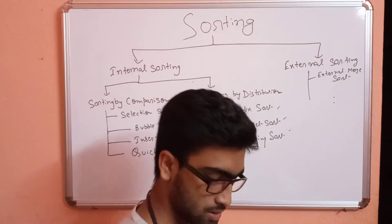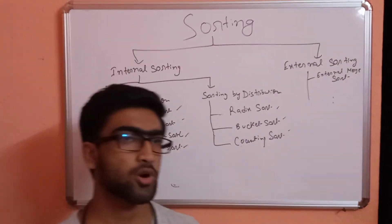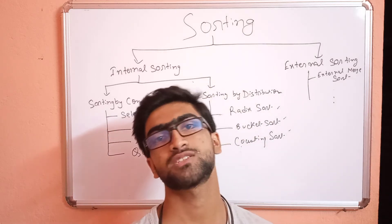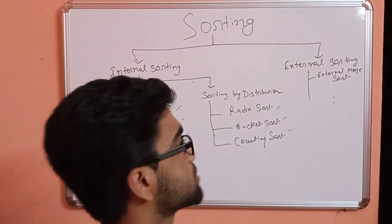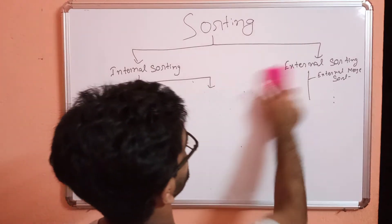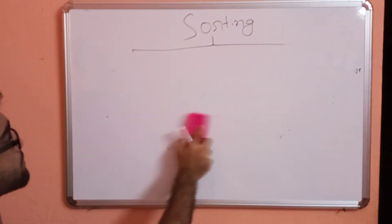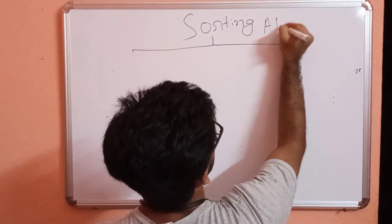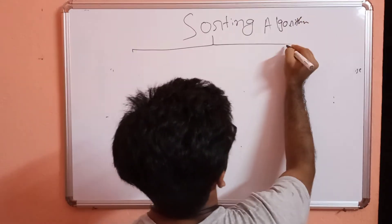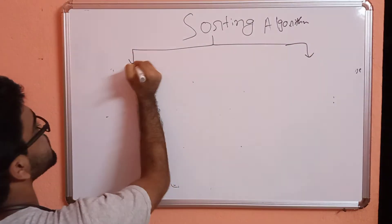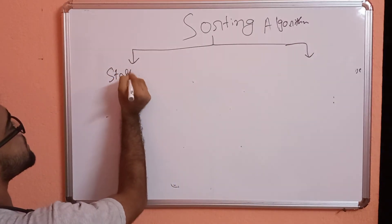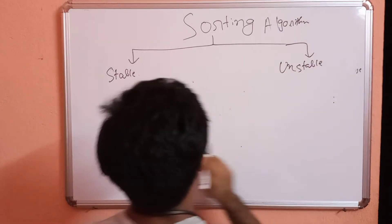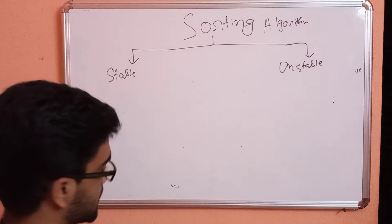Now, sorting algorithms are also of two types: one is stable sorting and another is unstable sorting. Let me explain what stable sorting means.